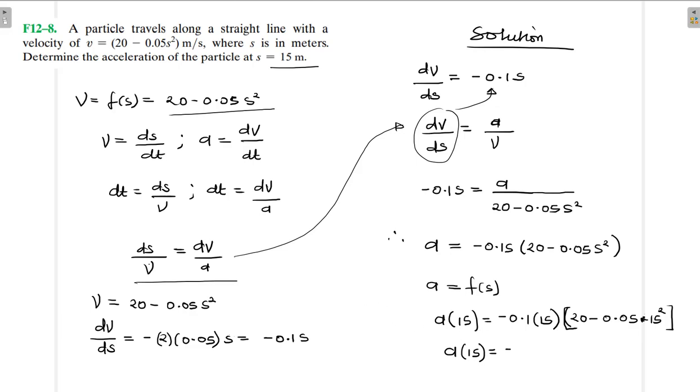So I'm finding minus 13.125, which I've rounded off to minus 13.13 meters per second squared.